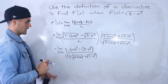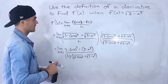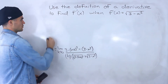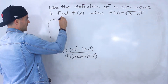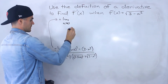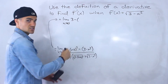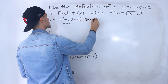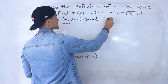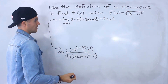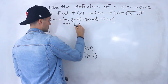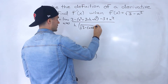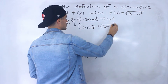Now we have to simplify that numerator. Taking the limit as h goes to 0, we expand (x plus h) squared by foiling to get x squared plus 2xh plus h squared, then minus 3 plus x squared after distributing the negative, all over h times the square root of 3 minus (x plus h) squared plus the square root of 3 minus x squared.